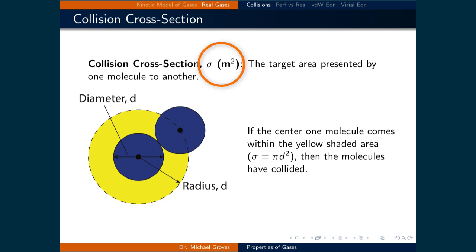Let's start by first defining the collision cross section, denoted as sigma. This is the area, in meters squared, around a molecule where if the center of a different molecule enters, they will collide.